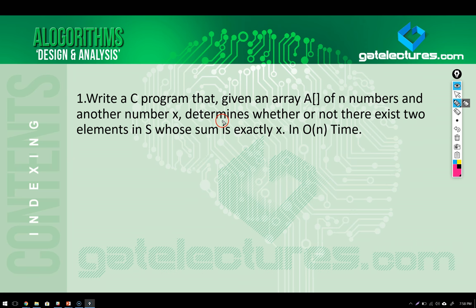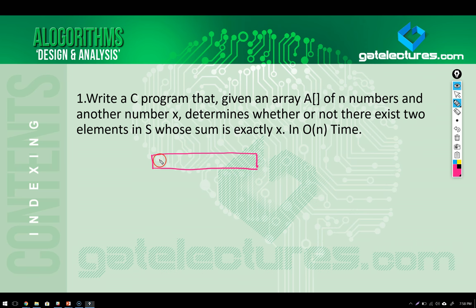The constraint is you have to do it in order of n time. What they are asking is: assume that we have an array like this, which is having some numbers like 0, 4, 2, minus 2, 9, 6, 11, and 10.